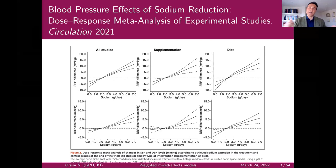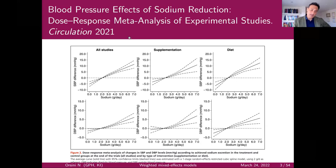So traditionally, for conducting dose-response meta-analysis, you had to pick studies with a certain number of contrasts. With the one-stage approach, this is no longer a requirement. You can have studies with more or less information, and they all join in the analysis.